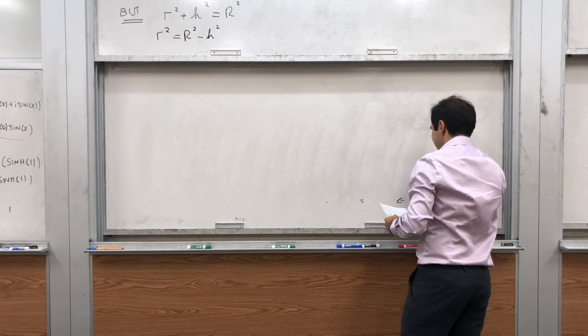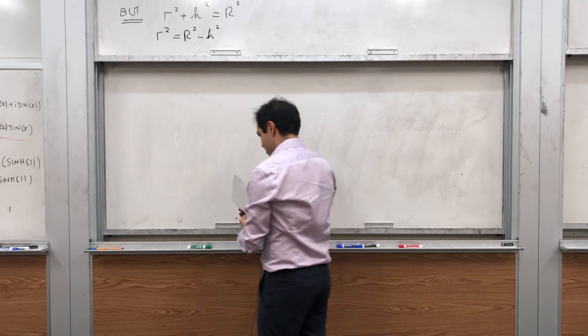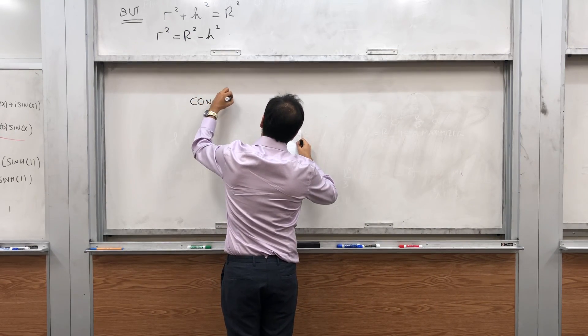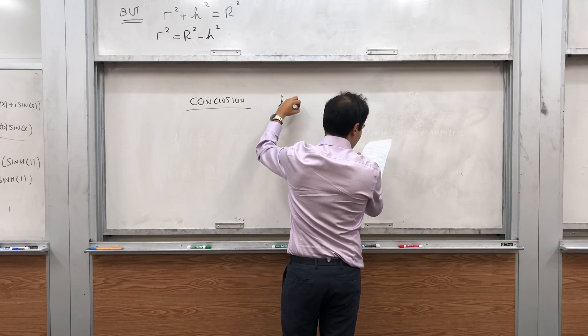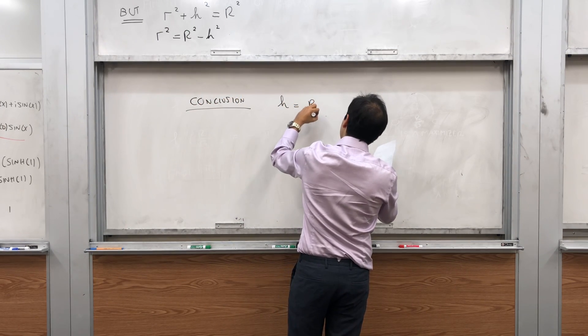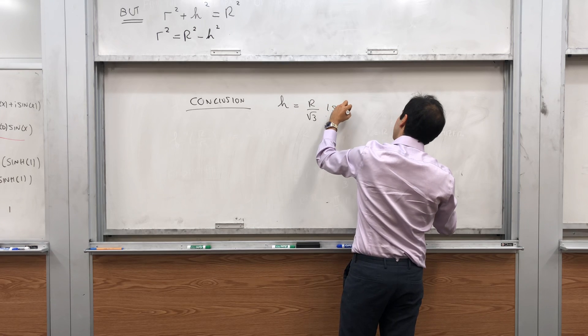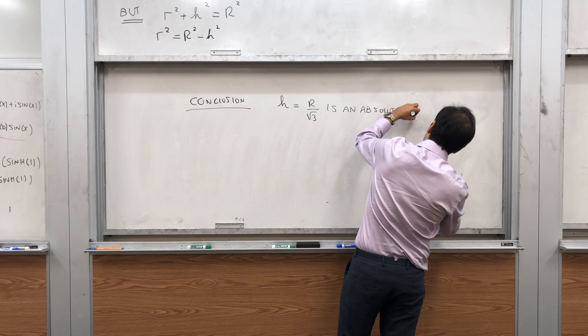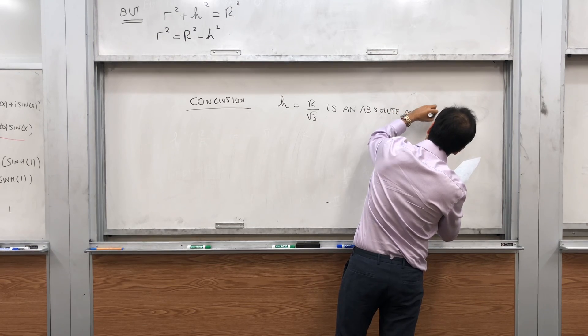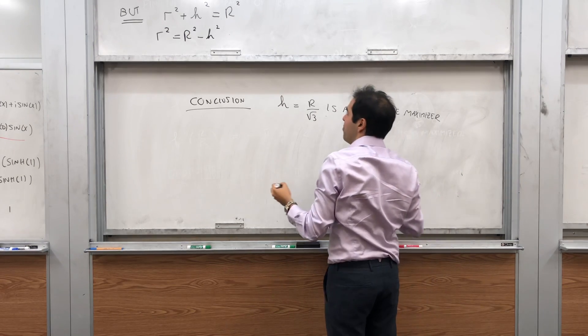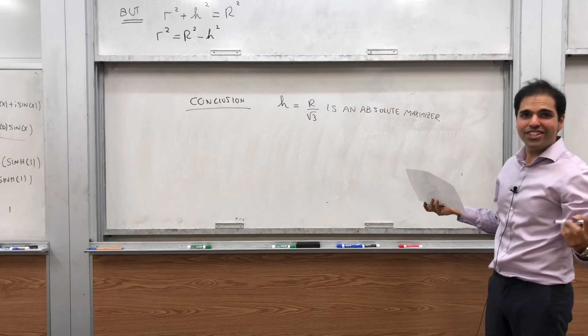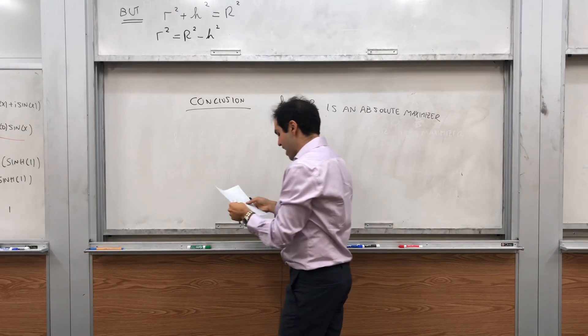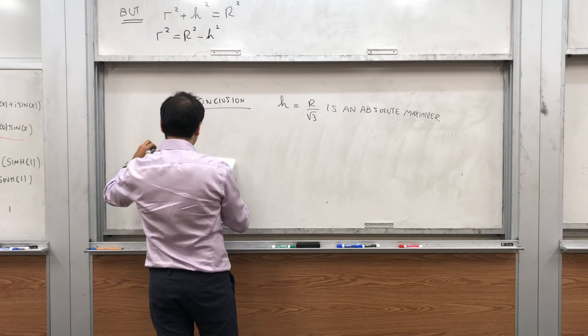So conclusion, h equals r over square root of 3 is an absolute maximizer. But careful, that's not the question. The question asks about the maximum value, so you just have to plug it into f.